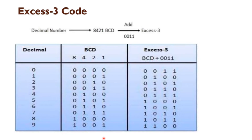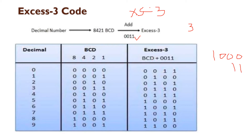The XS3 code is called Excess-3 code. To obtain XS3 code, add decimal number 3 to each BCD value. For example, the BCD value for 0 is 0000; add 0011, giving 0011 as the XS3 code. The decimal number 1 in BCD plus 0011 gives 0100.